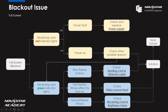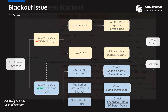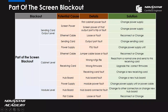This systematic method is not the only approach — it is just a suggested reference. After getting all the points, we can go to the troubleshoot table and check the solution. Now let's look at part of the screen blackout issue. This can be divided into three situations: the sending card output level, the cabinet level, and the module level.